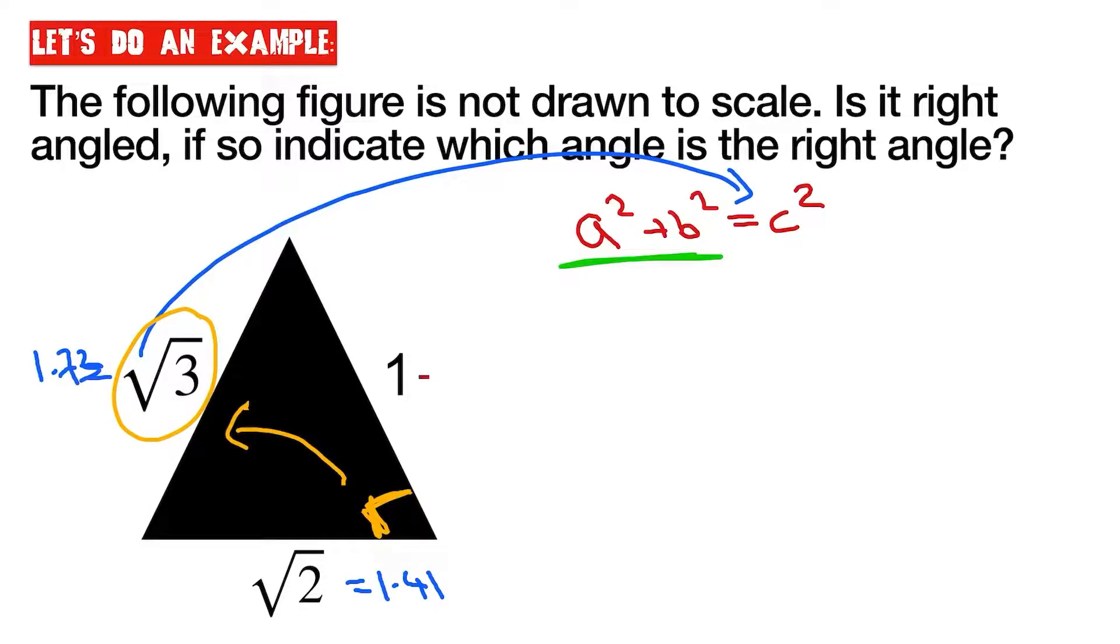That means then, therefore, that I could label one as A, I could label the root two as B, and I could label root three as C, or the longest side of the triangle. So let's substitute these values in.